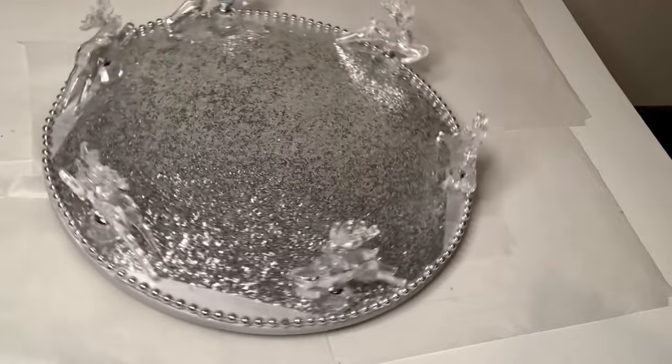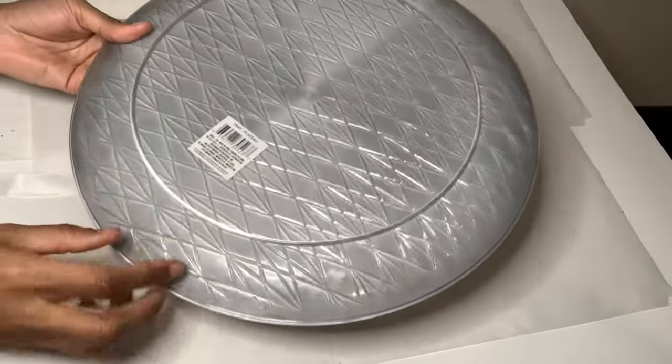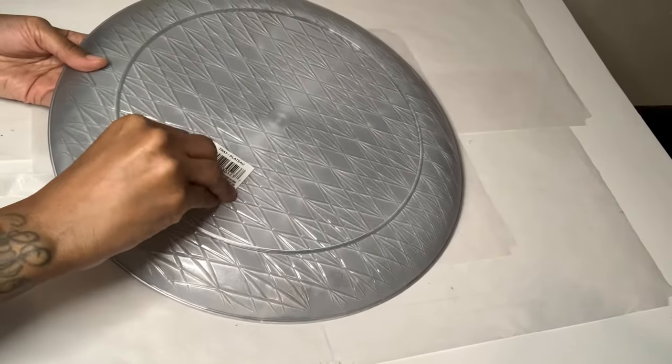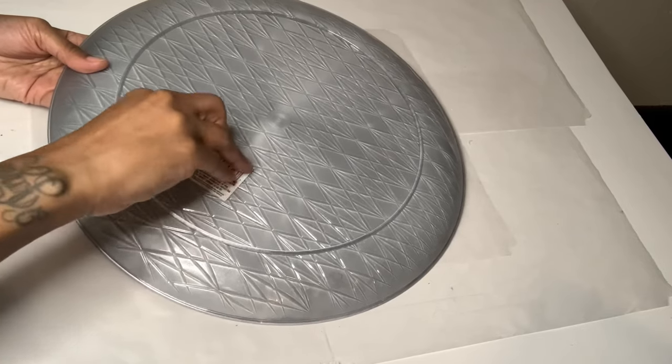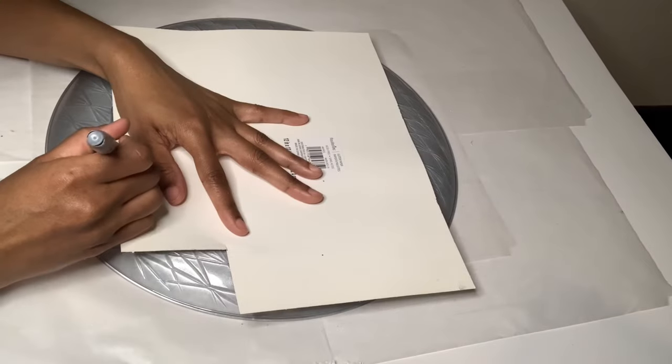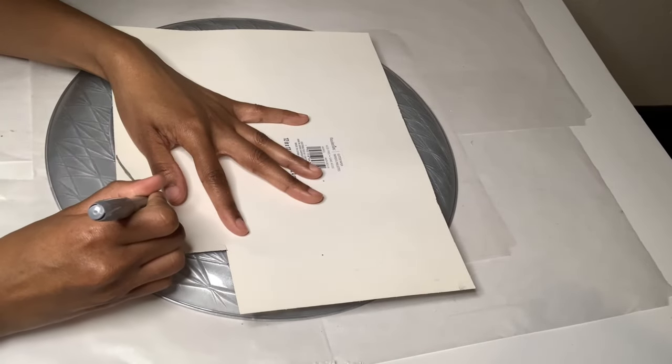I got this tray from Dollar Tree a while ago, which I previously spray painted with my silver metallic spray paint, and I'm just going to remove this tag before proceeding. I'm using that same glitter paper and my silver Sharpie to draw a circle.